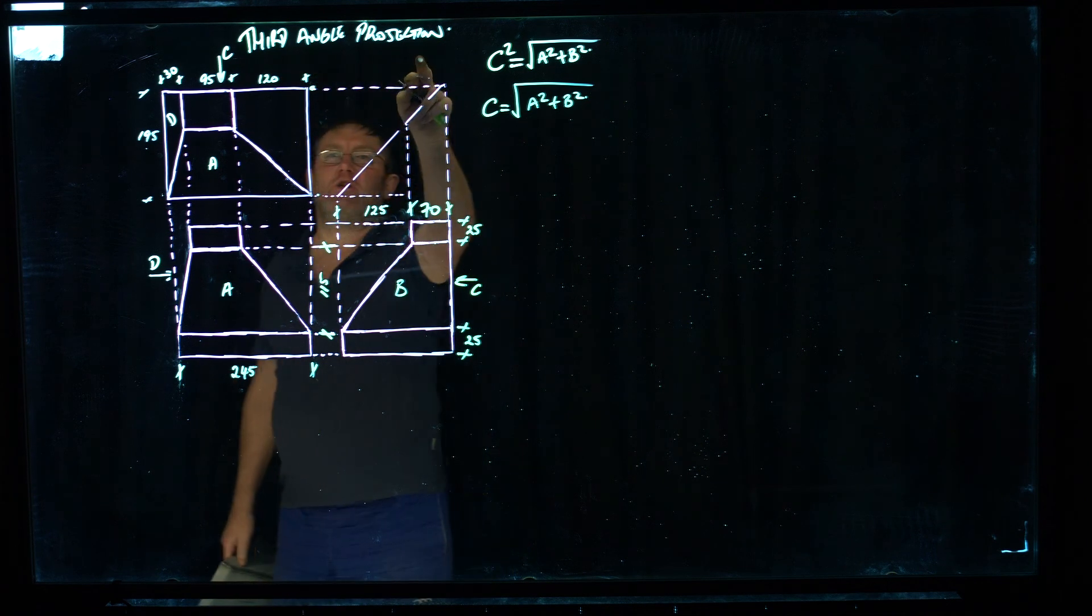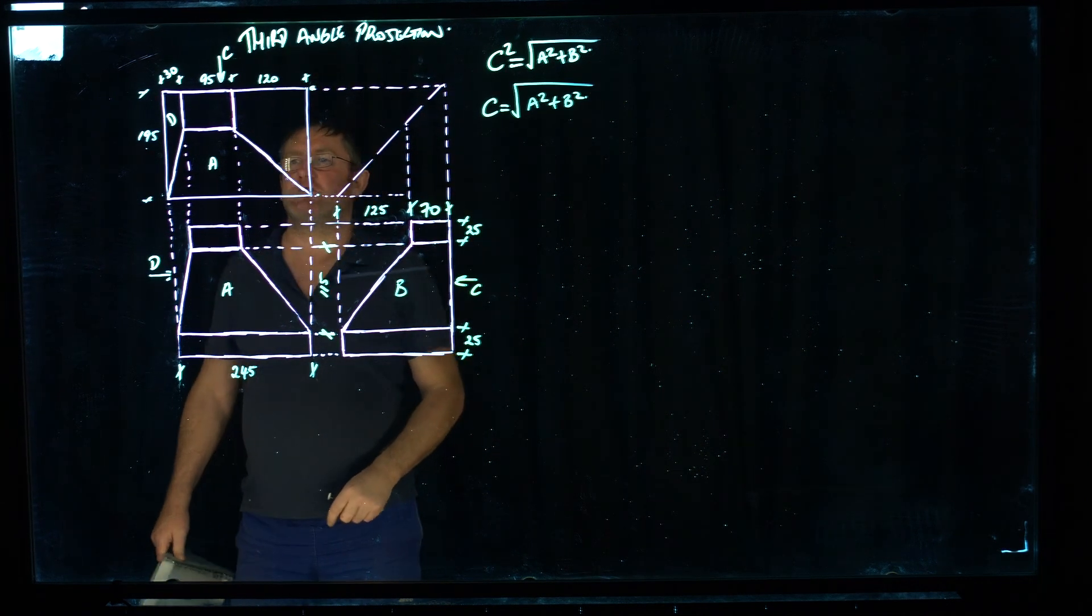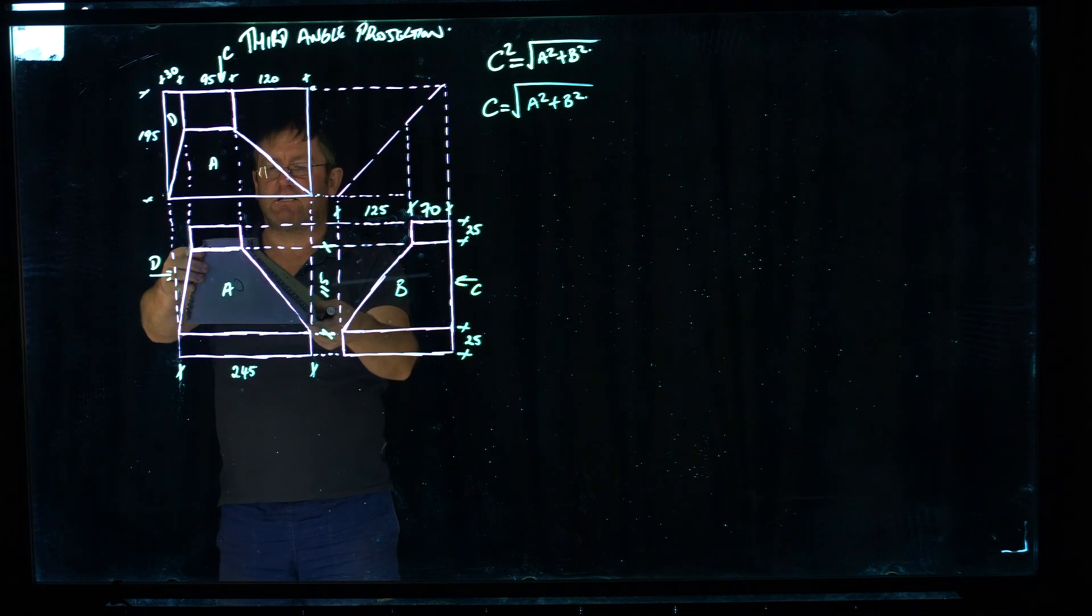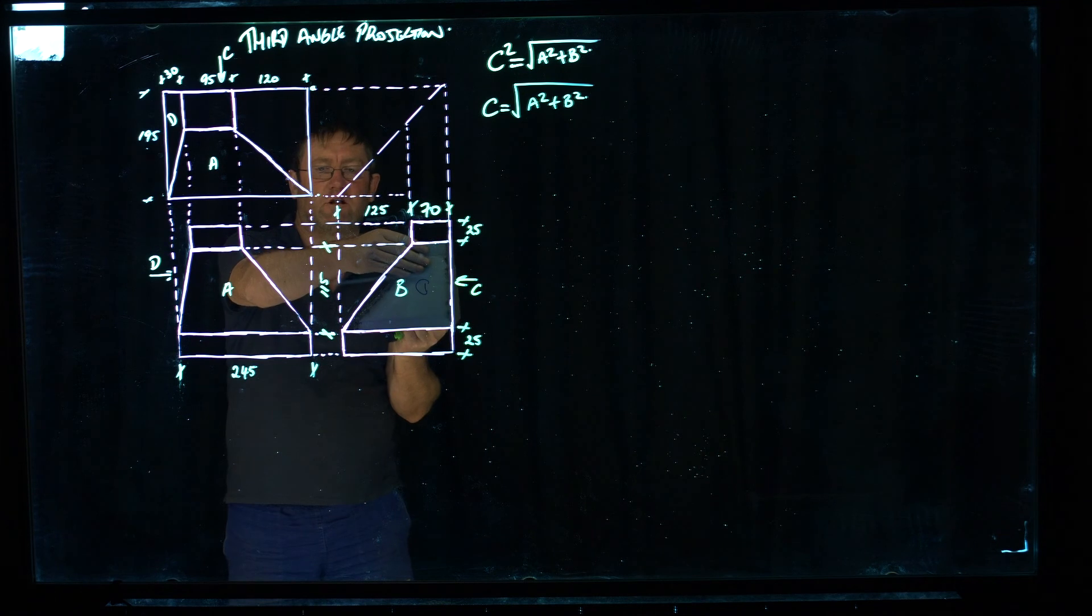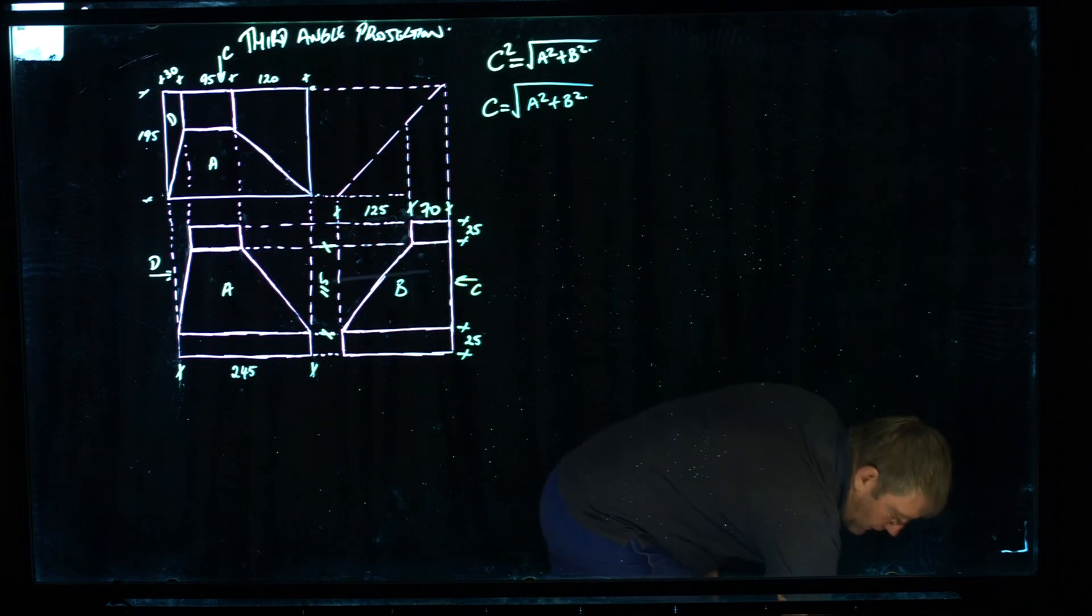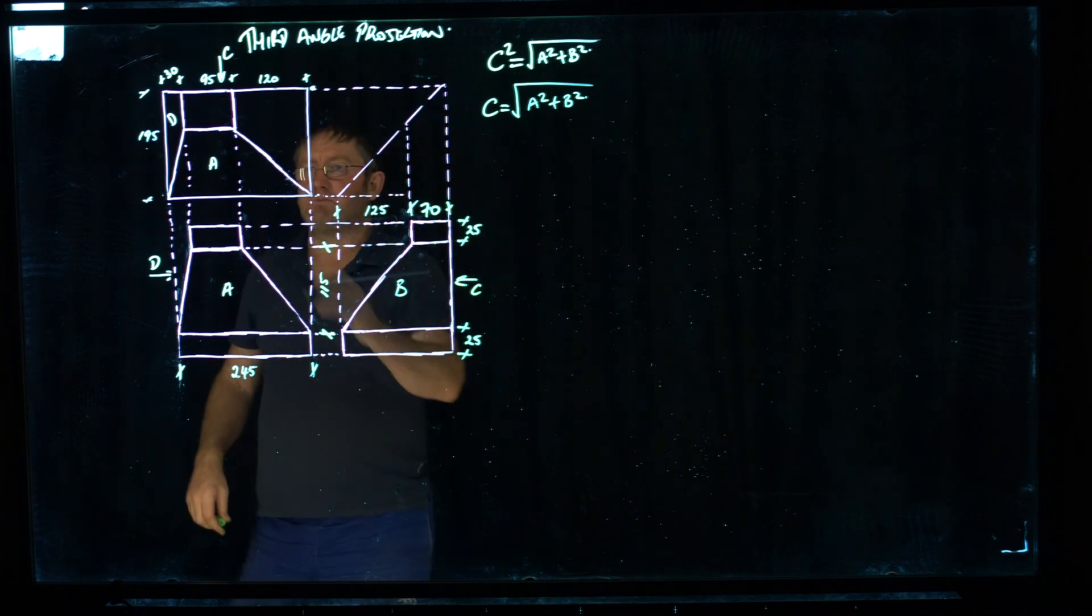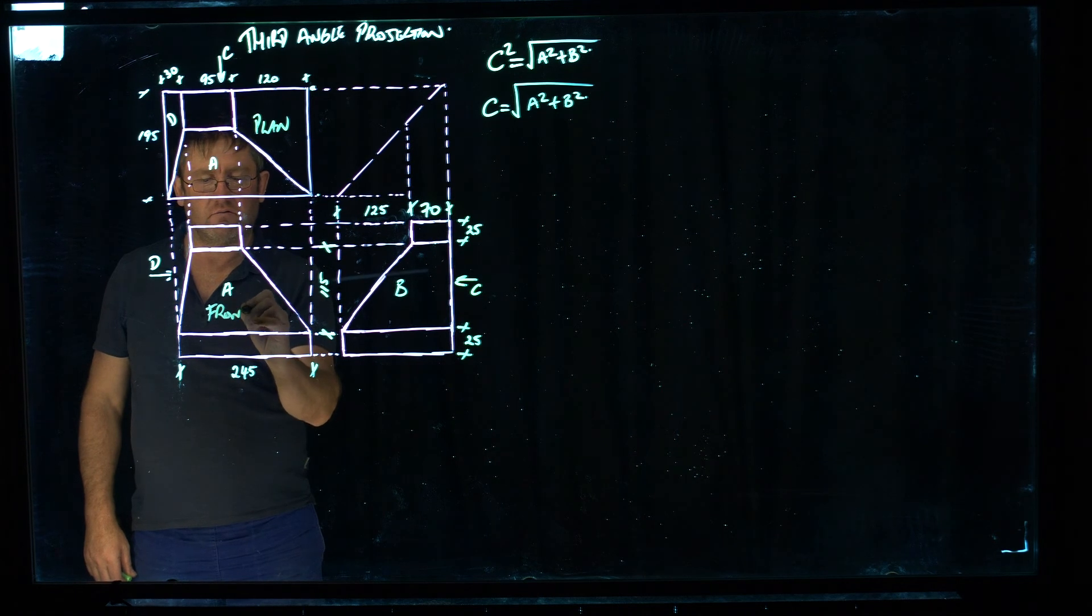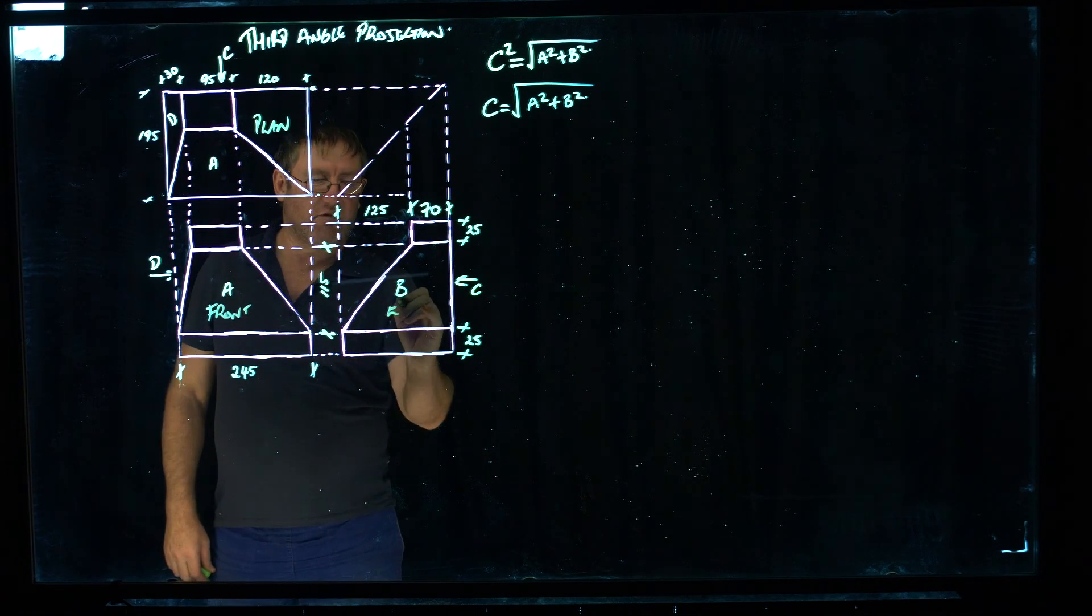So up here, I've drawn this in third angle projection. That's what we use here in New Zealand. I've got the plan view up the top. Then it rotates down to give me the front elevation and it rotates across to the left-hand side to give me the end elevation. So that's what we're going to work out. This being the plan, this is the front elevation, and this is the end elevation.